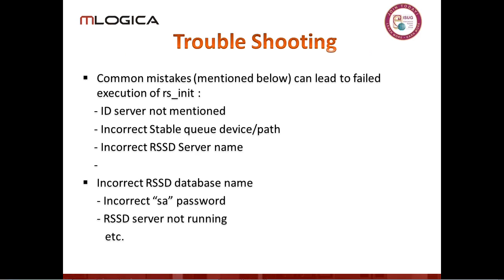Some common troubleshooting points: common mistakes can lead to failed execution. If you don't have an ID server, point to the wrong ID server, or don't mention one when required, you're going to be out of luck. Stable queue devices and paths need to have correct permissions. Wrong RSSD server names — that's your target for the ASE which is going to maintain the database of REP definitions — will also cause failures.